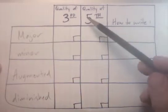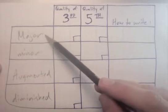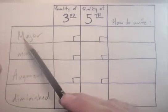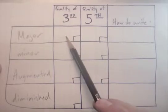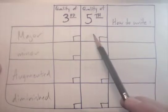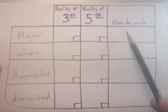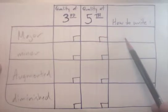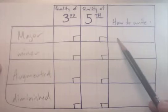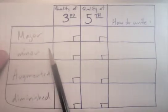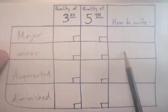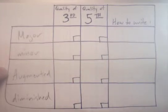This grid is going to tell us, if we go across this way, for major triads: what is the quality of the third in a major triad? What is the quality of the fifth? And it's going to explain to us how to notate that, or the nomenclature—how do we write a chord symbol for major triads? The next line would be minor triad: what quality of third, what quality of fifth, and so on. Let's fill this in.